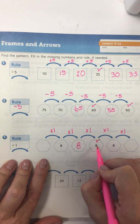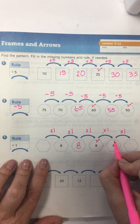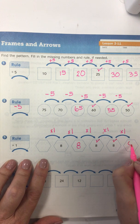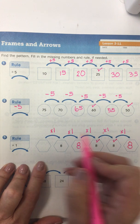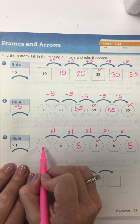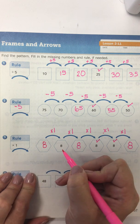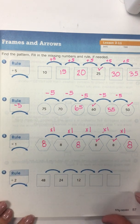check, and then eight times one is eight, check, and eight times one is eight. So what would my first box be? Well, what times one equals eight? Eight. And my rule is correct.